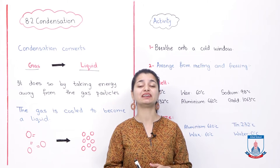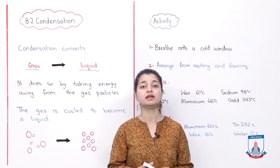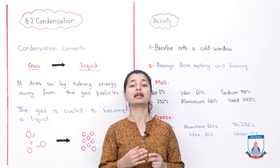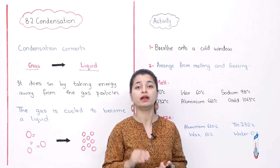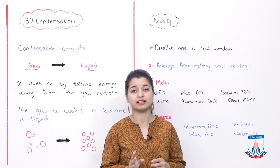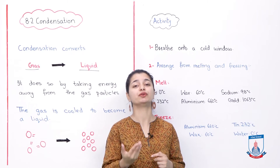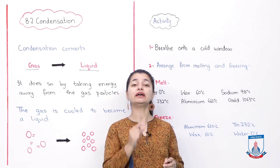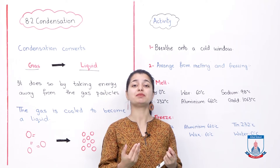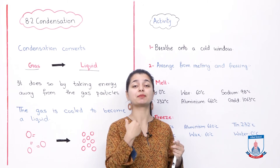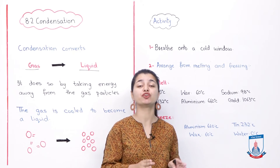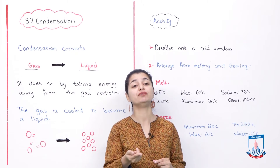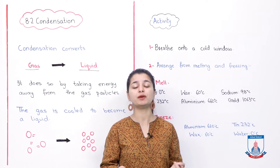We have listed activities that you can conduct to understand these processes better. For condensation, you can do a very simple exercise. On a cold day, you may have seen fog form on a car window from steam. What you can do is breathe out your breath — it is in the form of gas — onto a glass window. It will be converted into liquid on the glass because the temperature is cold. The gas from your mouth is converted into a liquid on the glass window. That is the simple process of condensation.